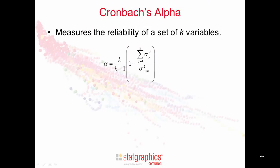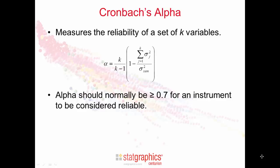Cronbach's alpha measures the reliability of a set of k variables by comparing the sum of the variances of those variables to the variance of the sum. Theoretically, alpha should be between 0 and 1, although estimates can fall outside that range. Many researchers believe that alpha should be greater or equal to 0.7 for an instrument to be considered reliable. There's also a standardized version of alpha, which is based on correlations rather than variances and covariances.